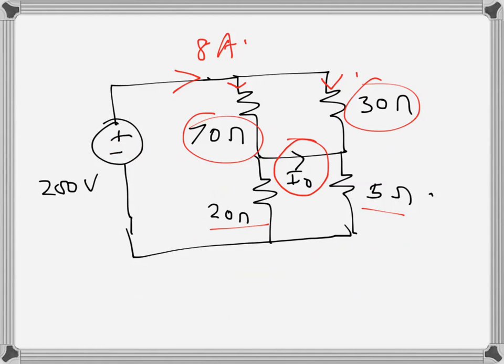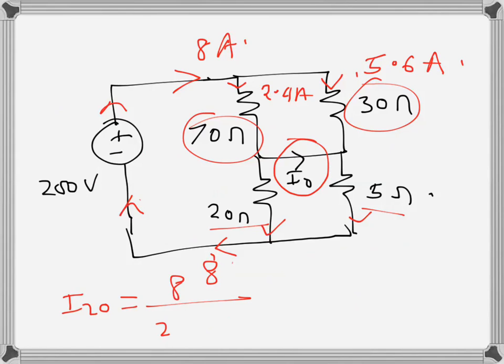So this is 2.4 amps and this one is 5.6 amps. We know these two currents. Now we need to know these two currents. The current through the 20 ohms resistance - the full current here is 8 amps. So I_20 is 8 over 20 plus 5 times 5, so 8 over 25 times 5, that's 1.6 amps.